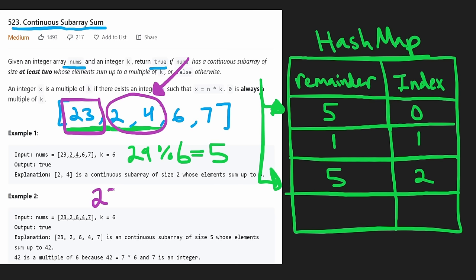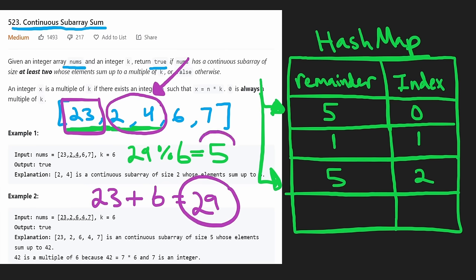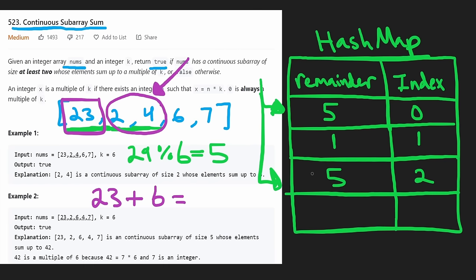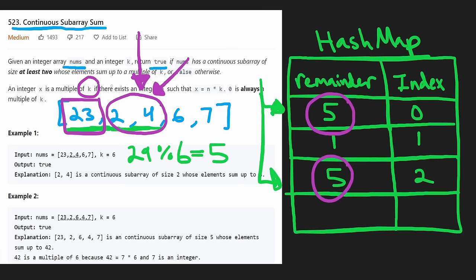This can only happen if the values added between those two prefixes total a multiple of k. We first had 23 with remainder 5, then added 2 plus 4 which is 6 — a multiple of k — giving 29, also with remainder 5. We could have added 12, 18, or any multiple of 6 and the remainder would still be 5. So if two prefixes share the same remainder, the subarray between them is divisible by k.